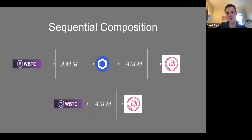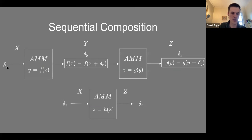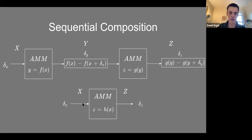If you write it down: the trader deposits delta x of asset x, gets delta y back from the first AMM, then puts delta y into a second AMM to get delta z. By following the math and substituting symbols, you can define a function h(x) that satisfies all our AMM axioms. You can effectively think of sequential trading as just putting in delta x and getting out delta z — the delta y in the middle doesn't matter. Sequential composition is well-defined and gives back another AMM.